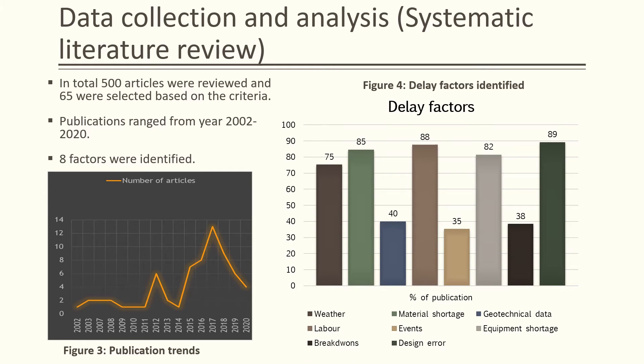89% of articles confirmed design error, 88% confirmed labour shortage, 85% confirmed material shortage, 82% confirmed equipment shortage, and 75% of articles confirmed weather as a factor. Other factors confirmed by smaller numbers of articles included events, breakdowns, and geotechnical errors, which were also identified during the systematic literature review.